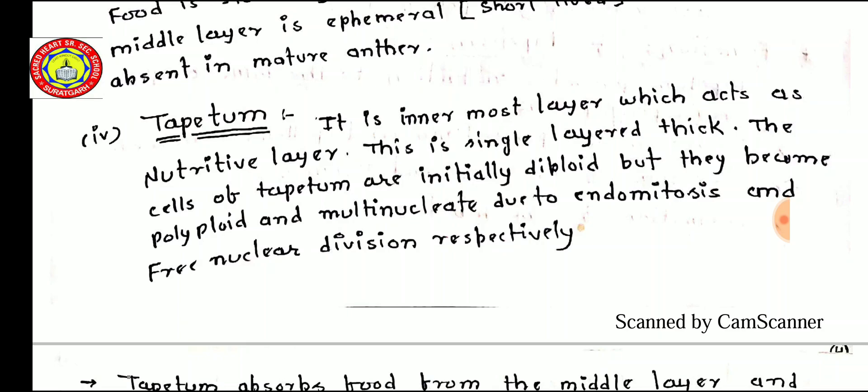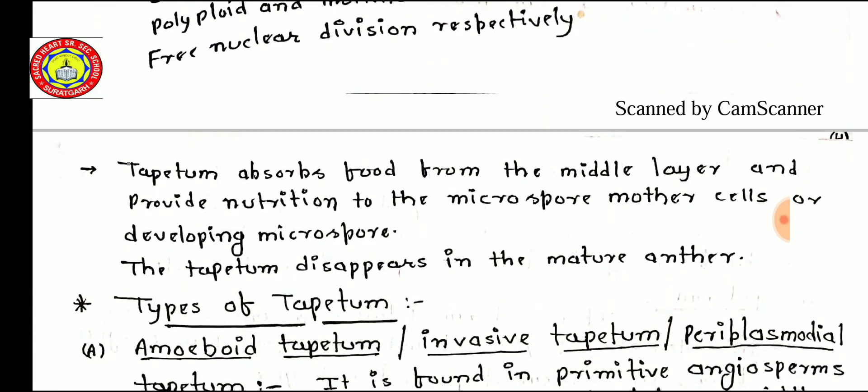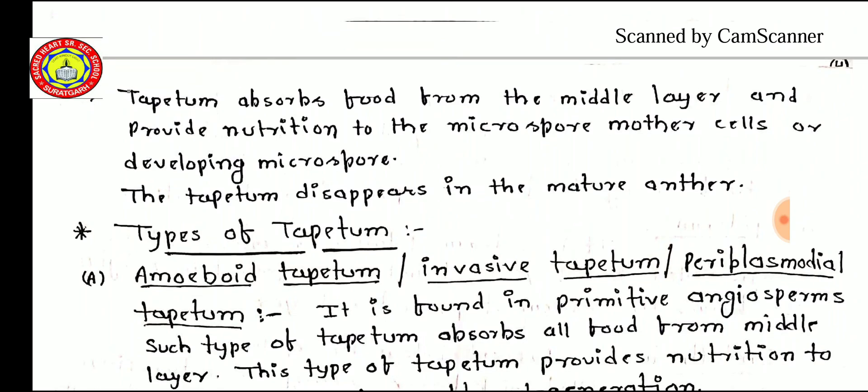The tapetum is a nutritive layer that supports pollen grain development. First, pollen mother cells develop, then pollen mother cells are converted into pollen tetrads, and then pollen tetrads are converted into pollen grains. During this development, nutrition is required, which is provided by the tapetum to the developing microspores or pollen grains. The tapetum absorbs food from the middle layer and provides nutrition to the microspore mother cell.